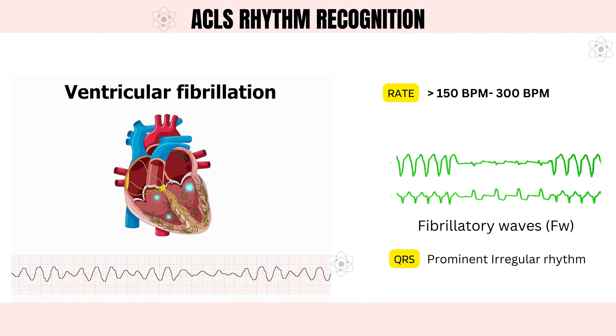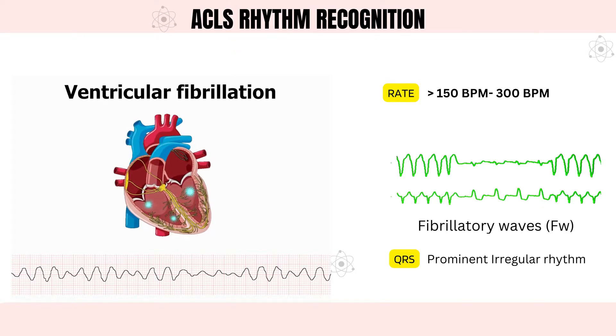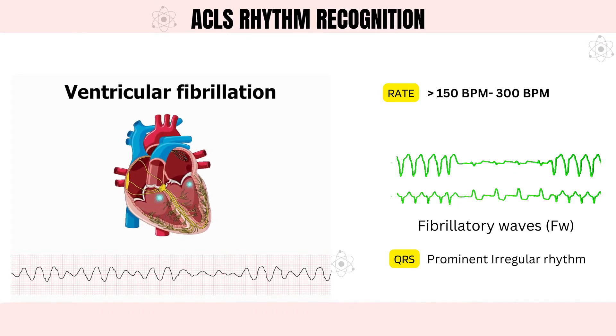Because both VT and VF prevent the heart from delivering blood to the body's vital organs, immediate CPR is necessary. CPR is essential for both arrhythmias in order to manually keep blood circulating throughout the body in the absence of a regular heartbeat.